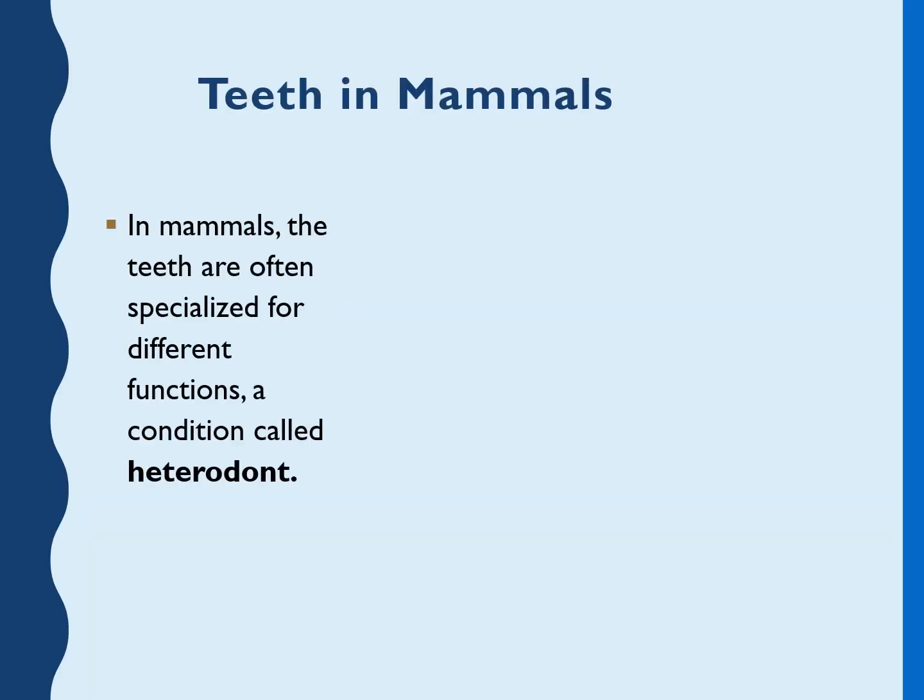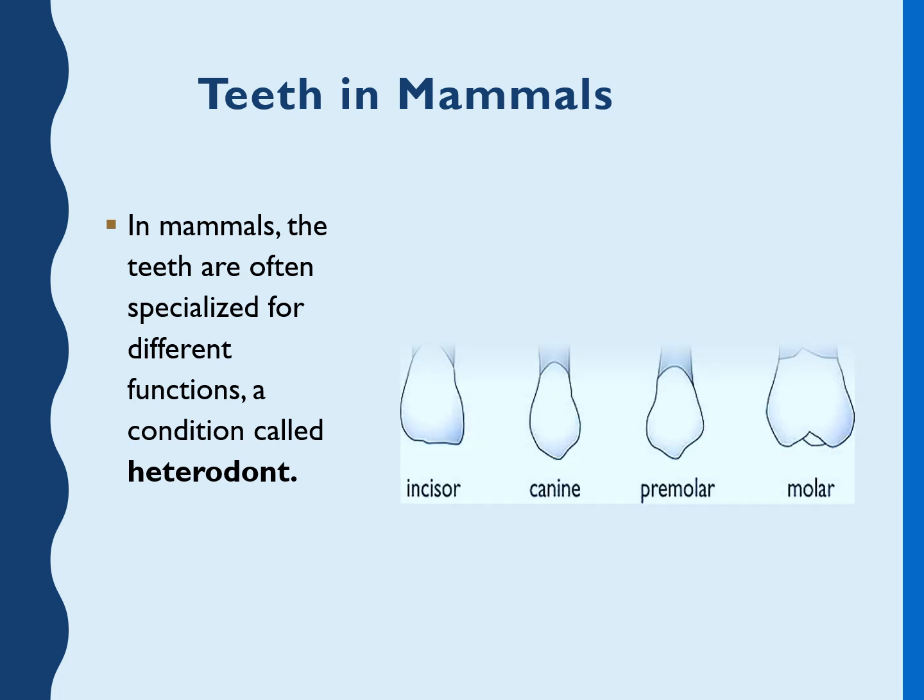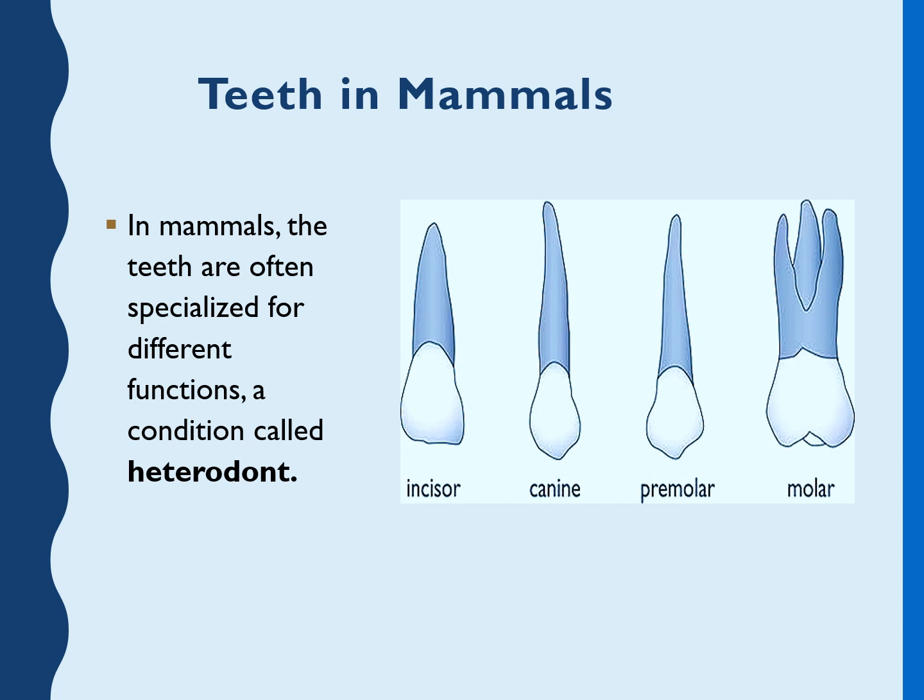In mammals, teeth are specialized for different functions. Because teeth are not uniformly shaped as in reptiles, this is called heterodont dentition — as opposed to the homodont dentition seen in reptiles. In heterodont dentition, teeth are specialized for different functions. The types include incisors, canines, premolars, and molars.